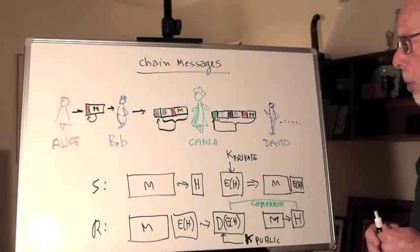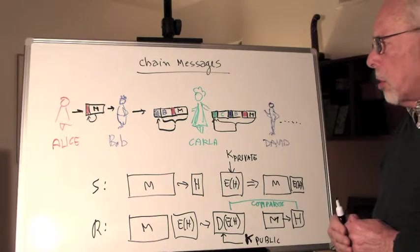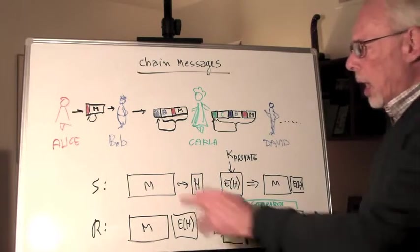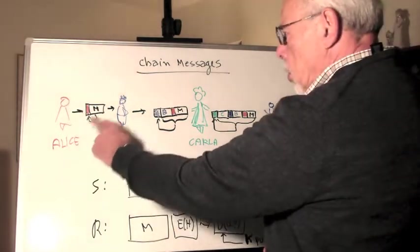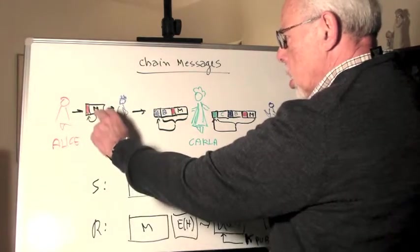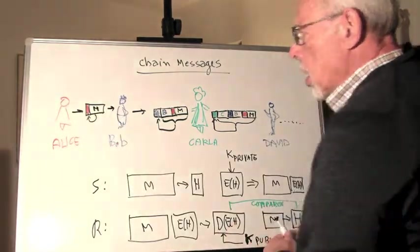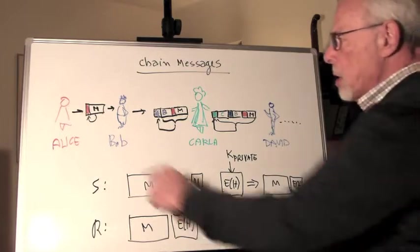Now, let's see how it can be used for chain messaging. Alice writes a message. She attaches to it the encrypted hash and sends it to Bob.